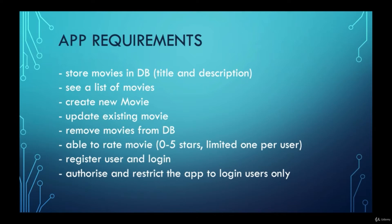Basically we are doing a typical CRUD which is create, read, update and delete, and we need to implement it in the frontend. Our application should also be able to rate movies. As a user we need to rate a movie from one to five stars, and it should be limited to one rating per user. If you rate a movie already, the next time you rate it we will update your rating instead of creating a new one. We should also be able to register and login users, so we'll have login and register pages, and we need to authorize and restrict the application to logged-in users only.